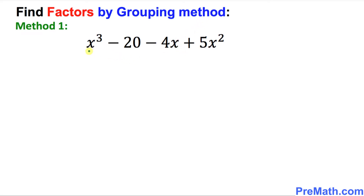As you can see over here, if you look at this polynomial, if you make a group of the first two terms and then make another group, can you see if there is anything that could be factored out in this first group? There is nothing in common, so that means we got an issue. How are we going to resolve this one?